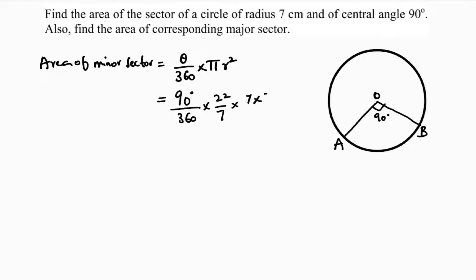So 90 times 1, 90 times 4, 7 and 7 cancel, 2 times 2, 2 times 11, so we are getting 77 by 2. So 77 by 2 is 38.5, which is 38.5 centimeter squared.